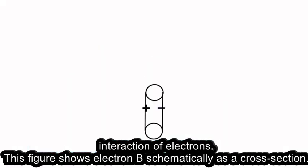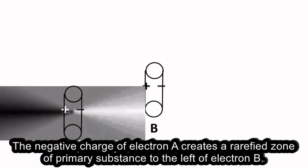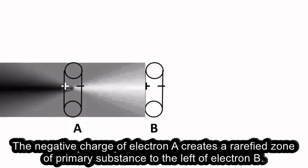This figure shows electron B schematically as a cross-section. Let electron A be to the left of B and oriented in the same direction. The negative charge of electron A creates a rarefied zone of primary substance to the left of electron B.